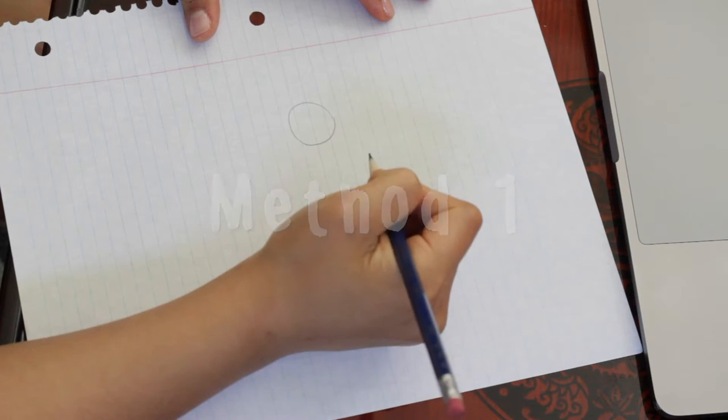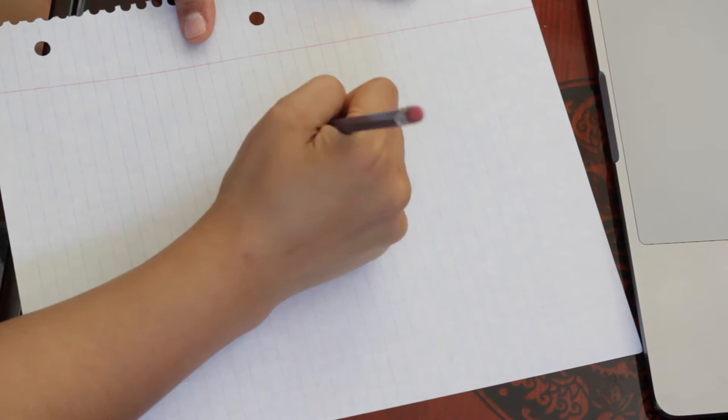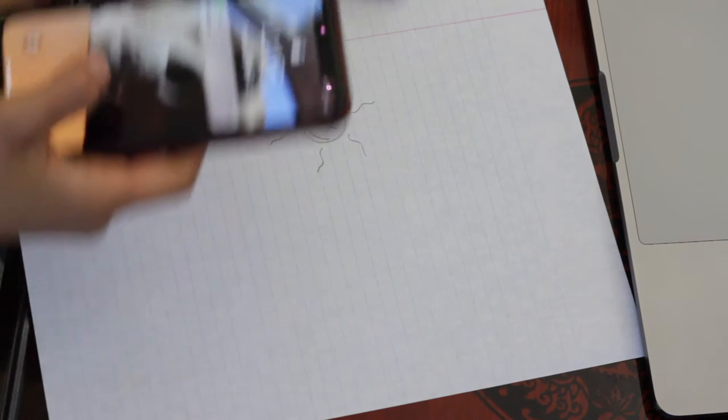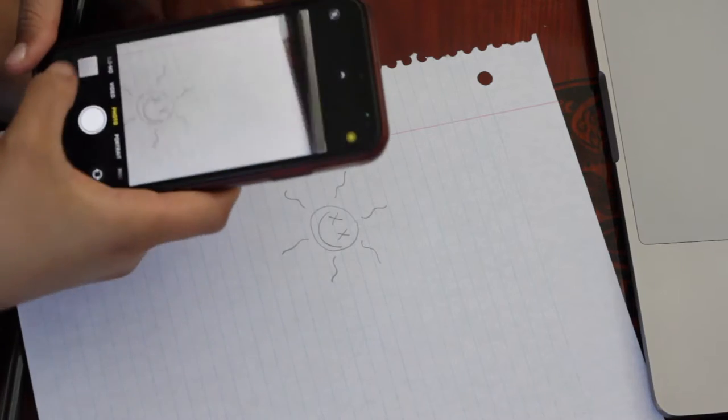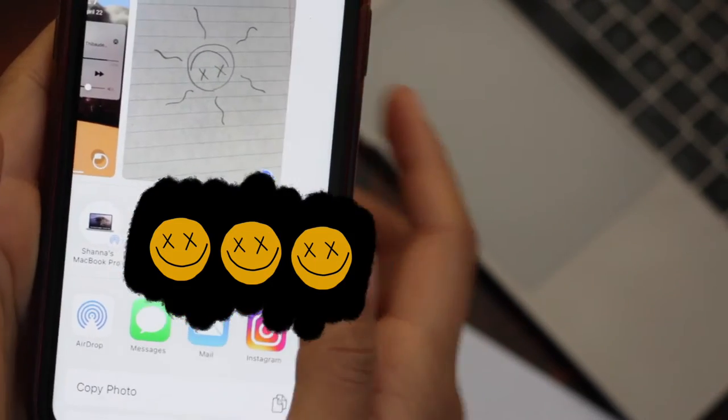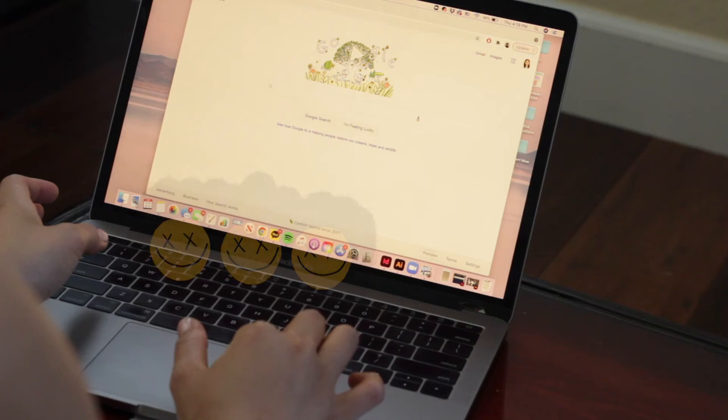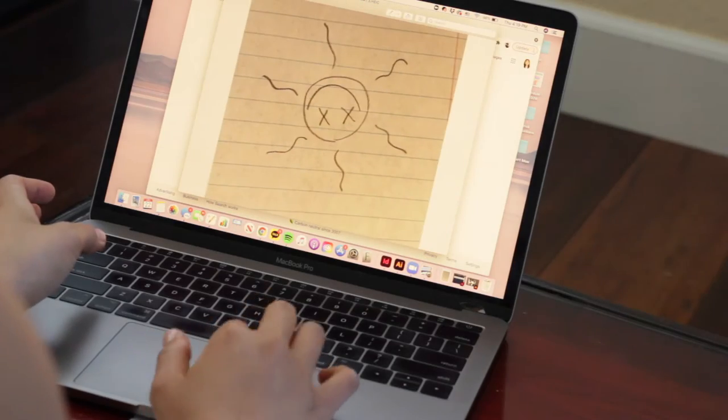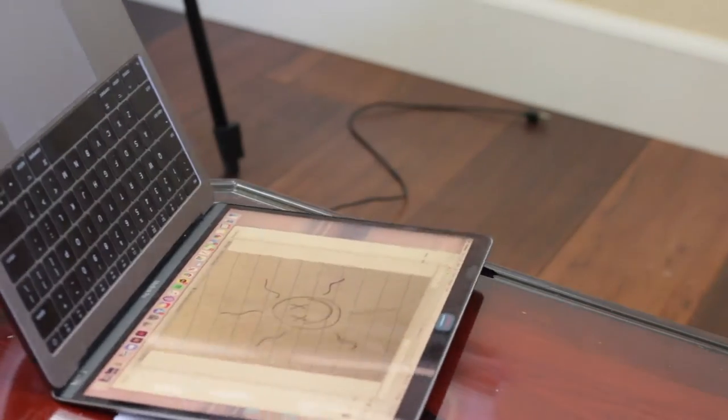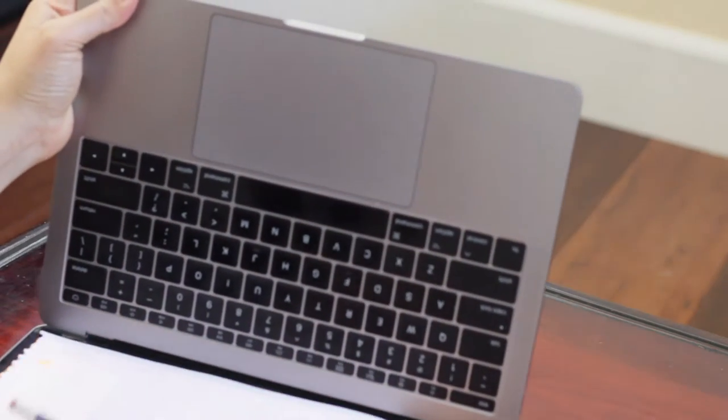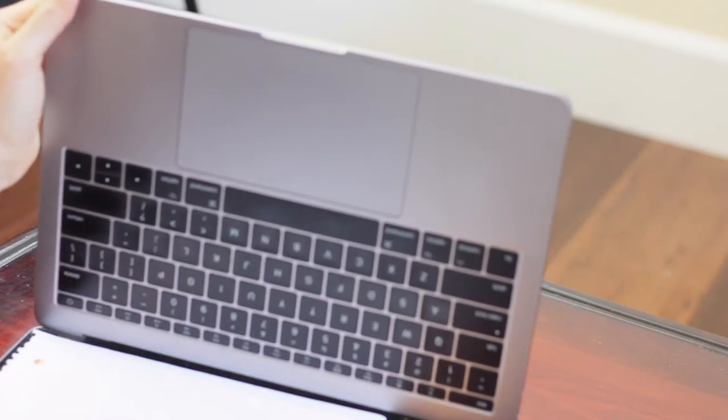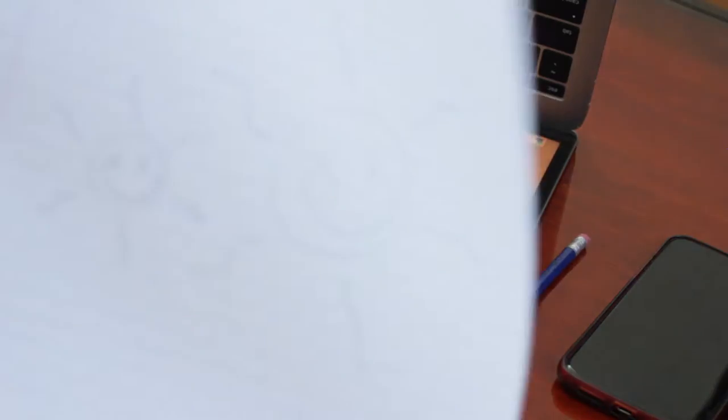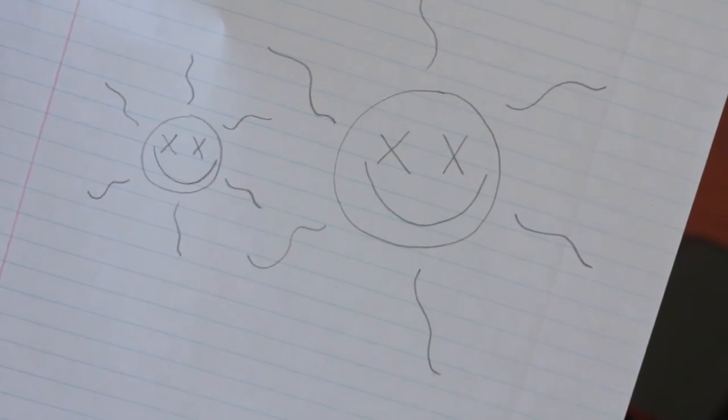Okay, so this first method you can use is for when you draw a design that you really like but it just happens to be a little too small. All you have to do is take a picture of it and then send it to your computer. When it's on your computer, you can increase that size as big as you want. You can even let it go off the screen and then just move the paper around when you're tracing it onto another paper. You can see right here I'm drawing the same exact design just in a larger size.